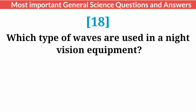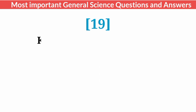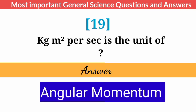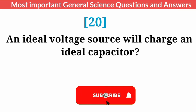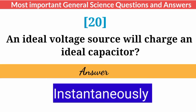Which type of waves are used in night vision equipment? Answer: Infrared waves. Kg·m² per second is the unit of? Answer: Angular momentum. An ideal voltage source will charge an ideal capacitor? Answer: Instantaneously.